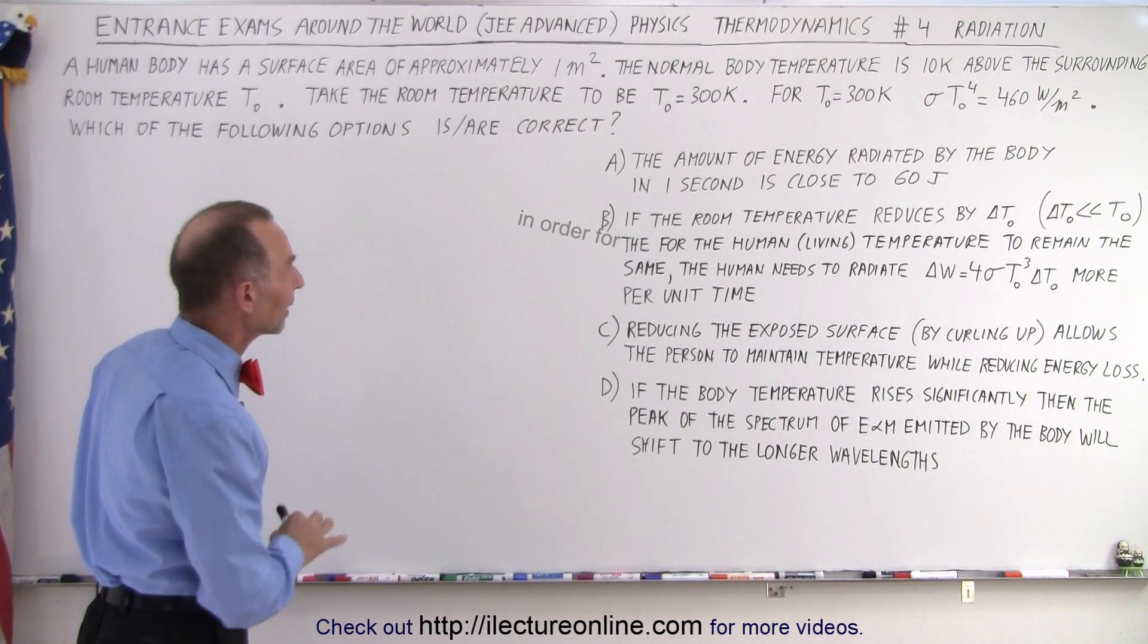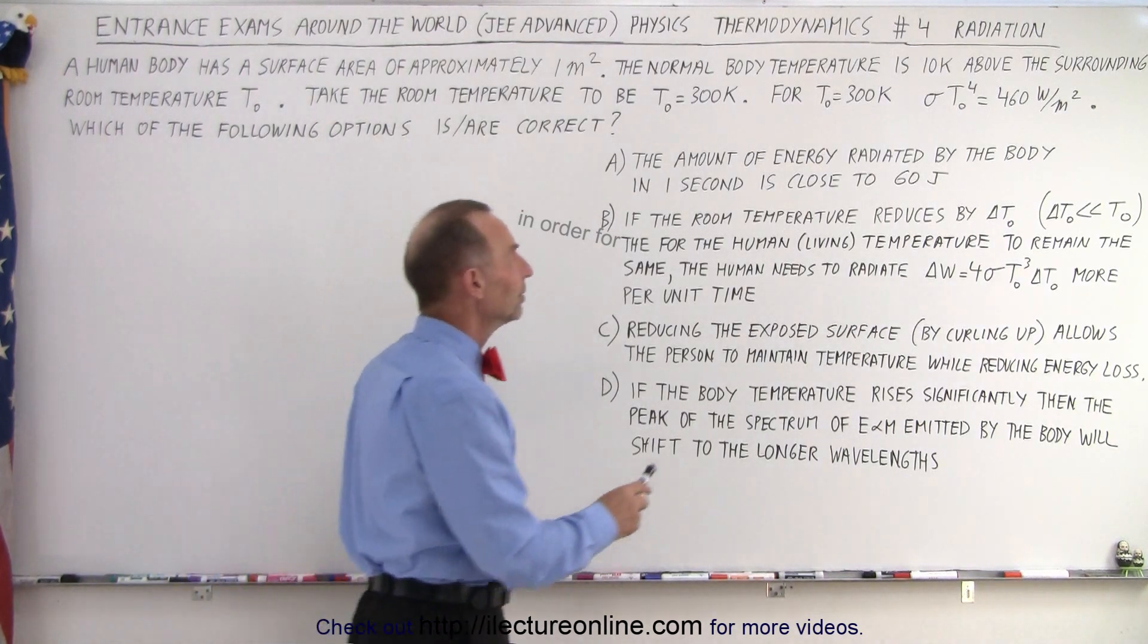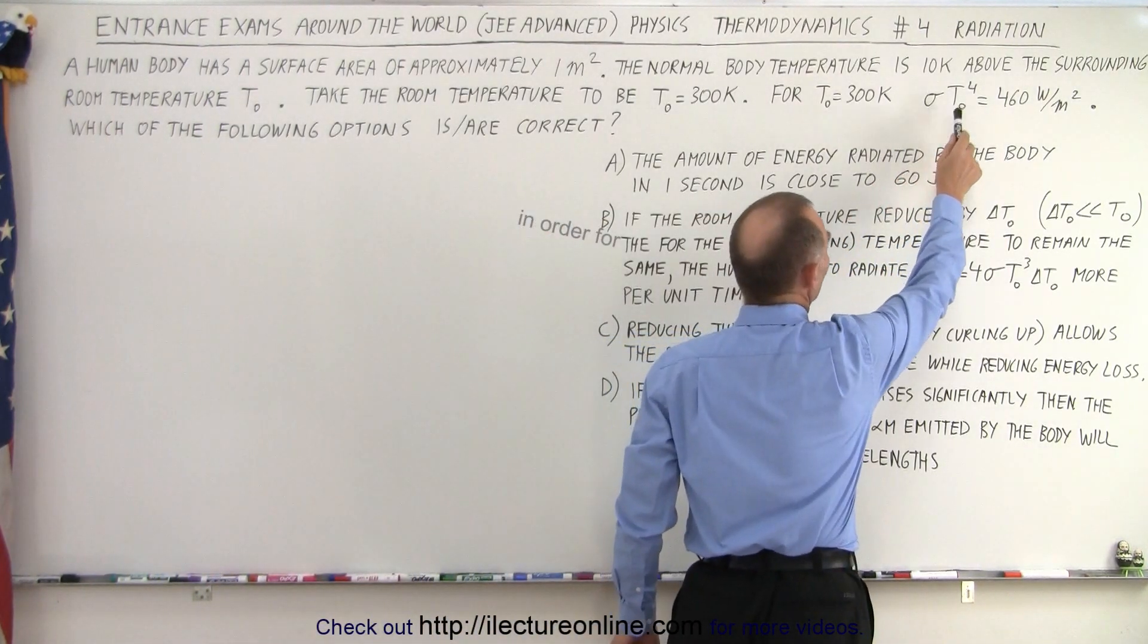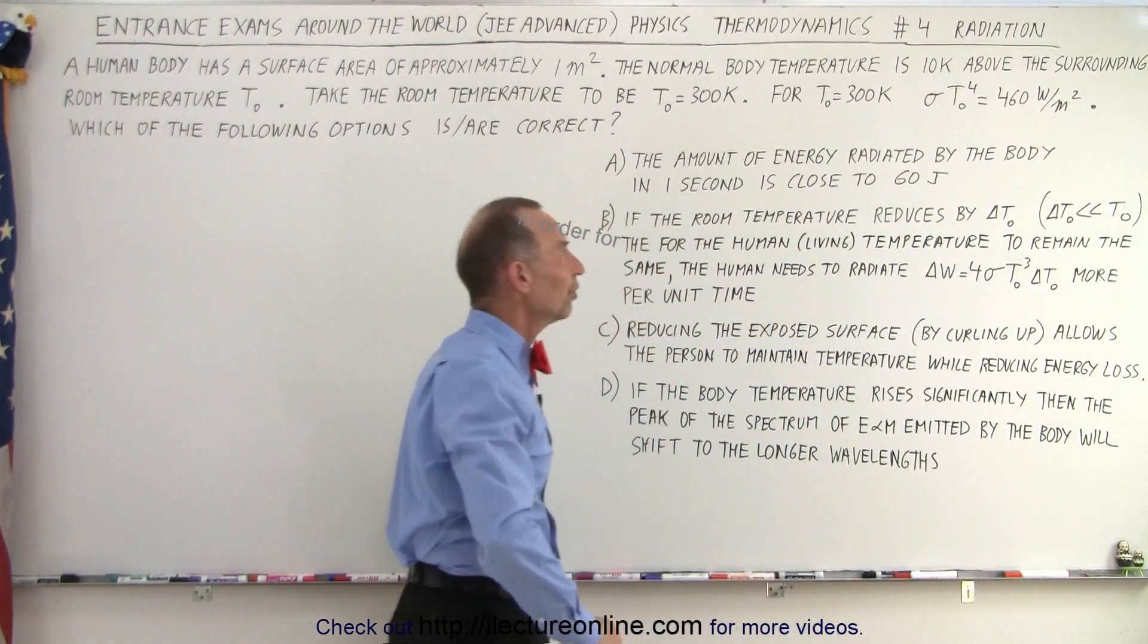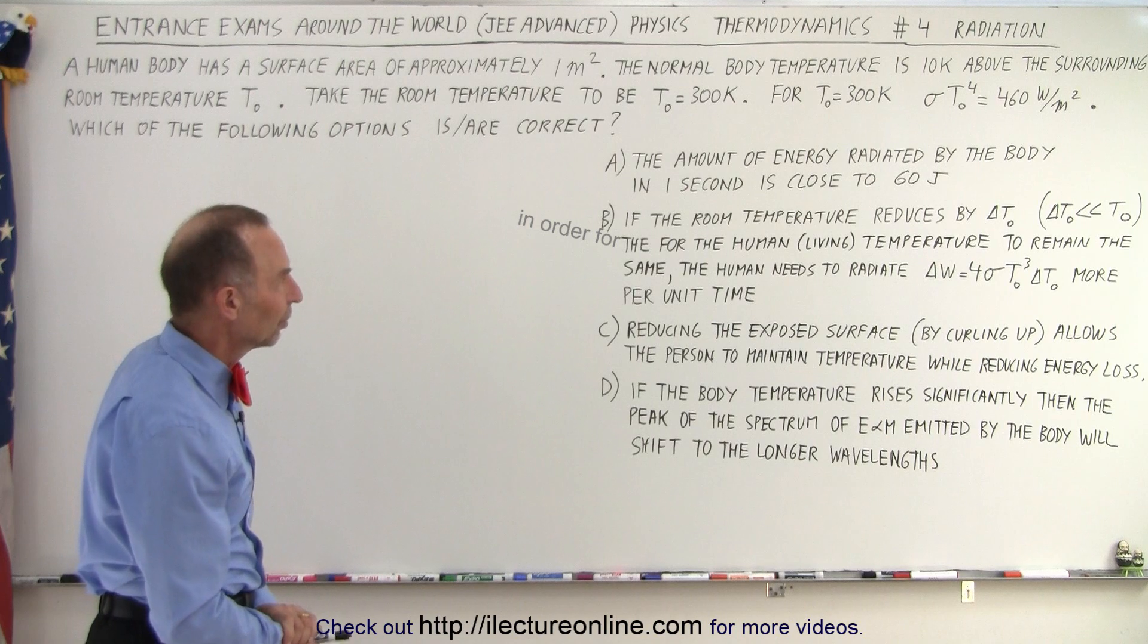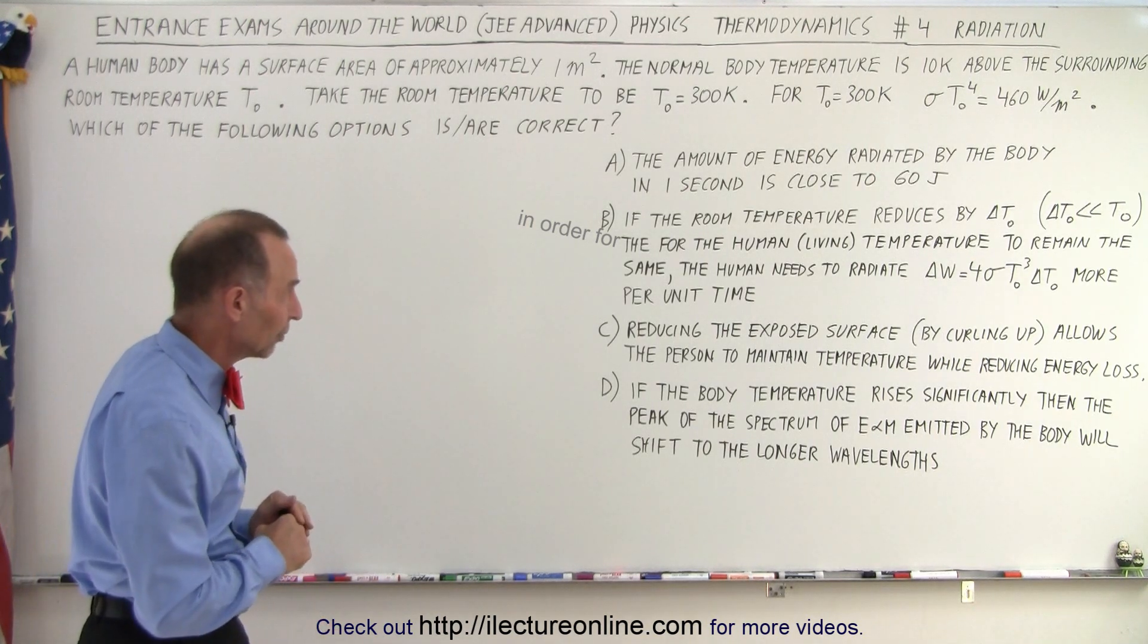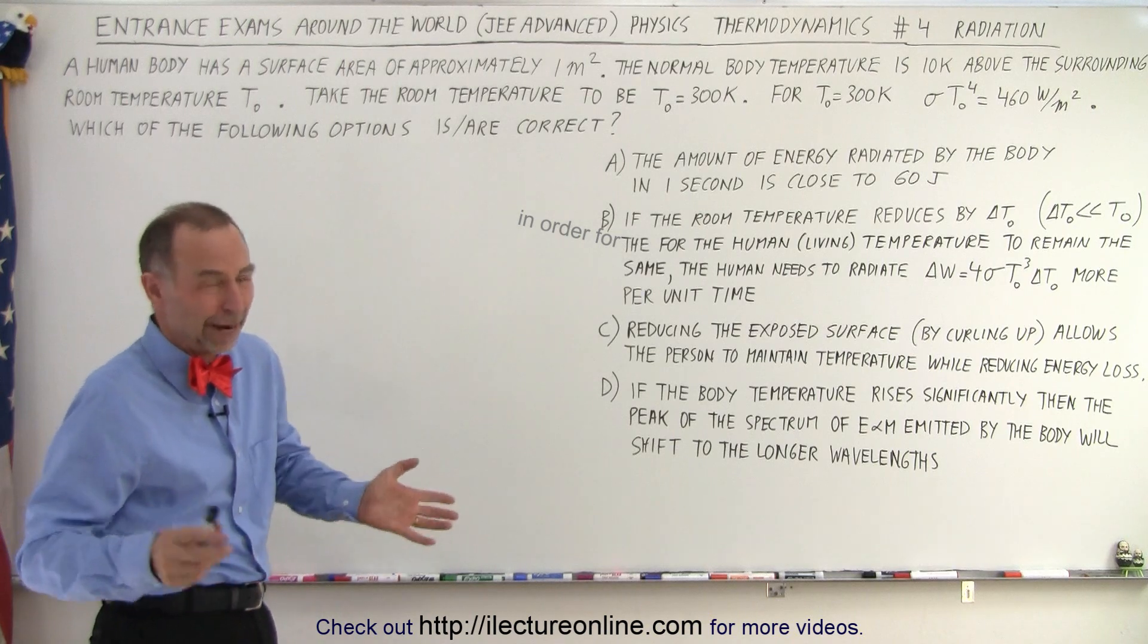Take the room temperature to be 300 Kelvin. For T equals 300 Kelvin, sigma, the Boltzmann constant, times T sub-naught to the fourth power is equal to 460 watts per square meter. So now they tell us here are four statements. Which of these four statements are correct? Could be one, could be all four, perhaps even none.